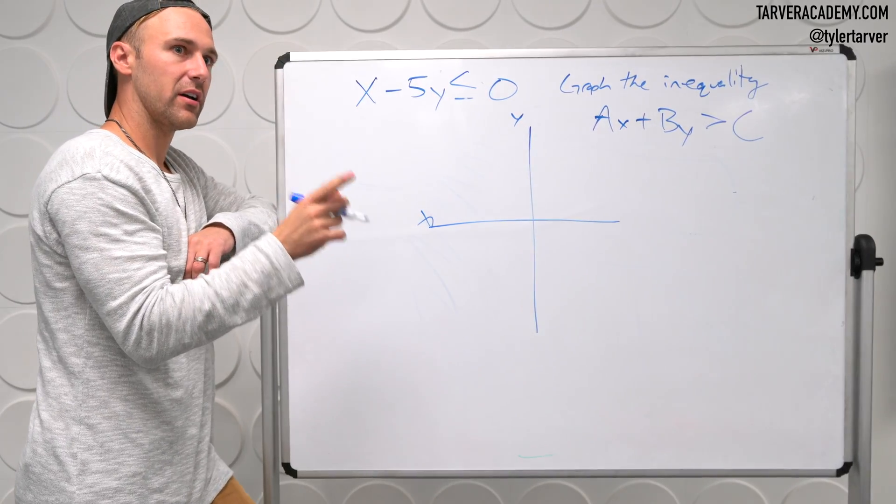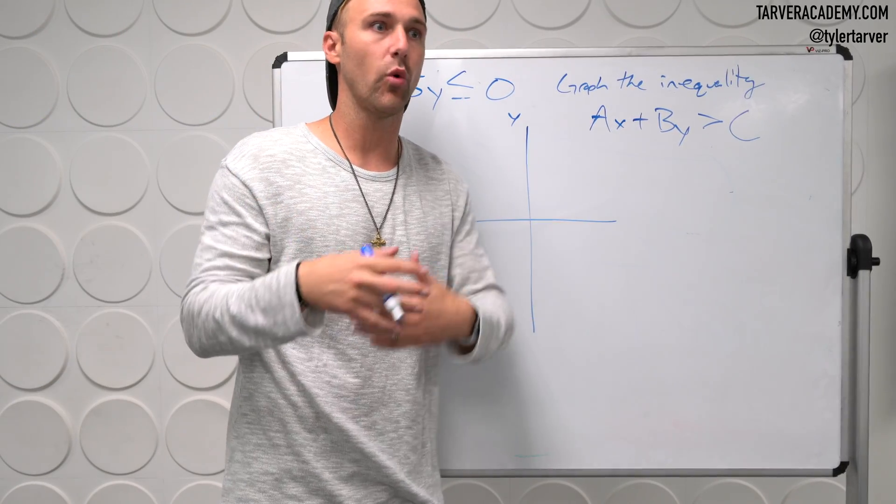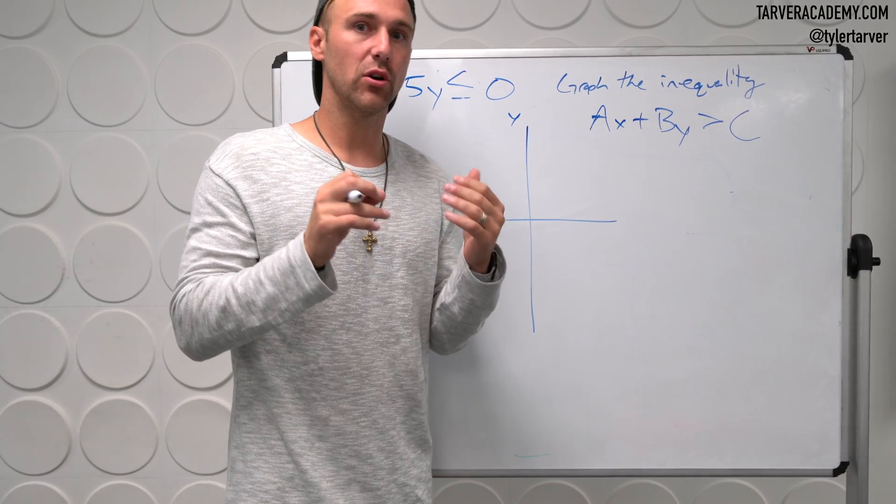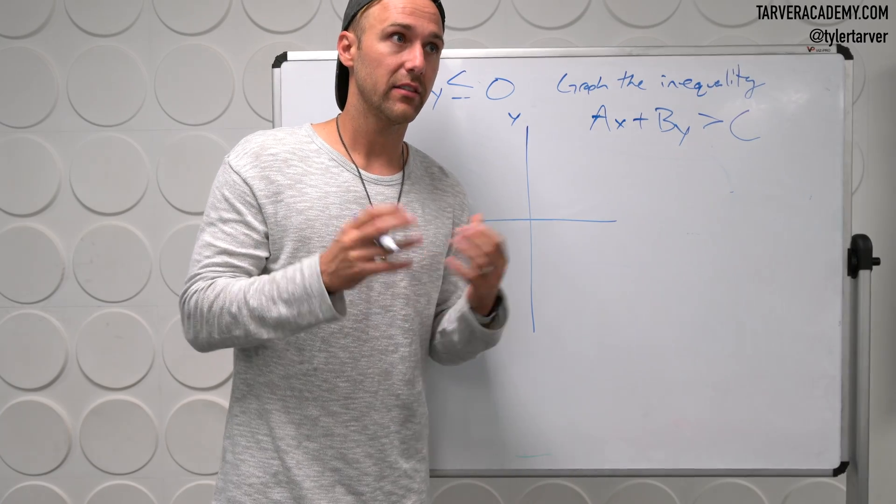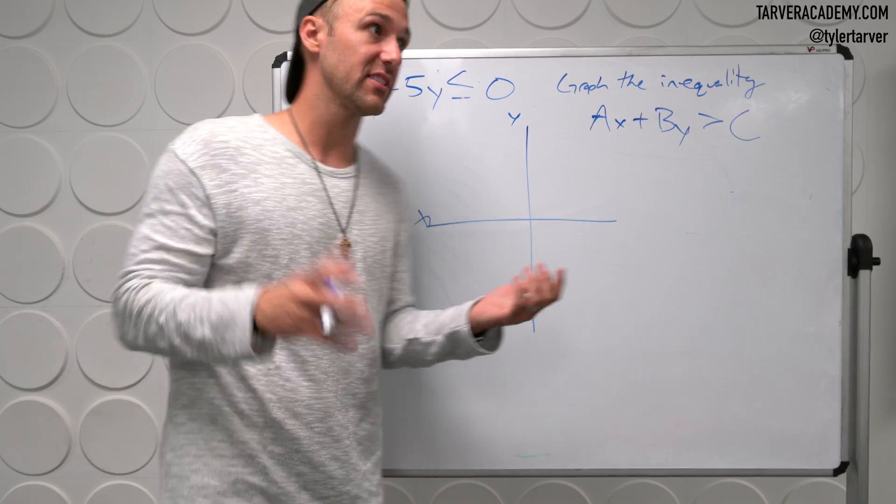First step. You almost pretend that this is not an inequality. Pretend like it's an equal sign because you want to plot this line. Easiest way to plot this line is to do the x and y intercepts. The reason that's the easiest way is because you're plugging zero in and it's just the quickest and easiest way.